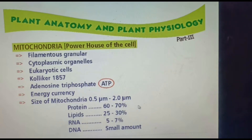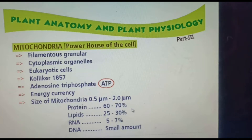The components present in mitochondria are: proteins, lipids, RNA, and DNA. Protein is 60 to 70 percentage, lipids 25 to 30 percentage, RNA 5 to 7 percentage, and DNA is present in small amounts.